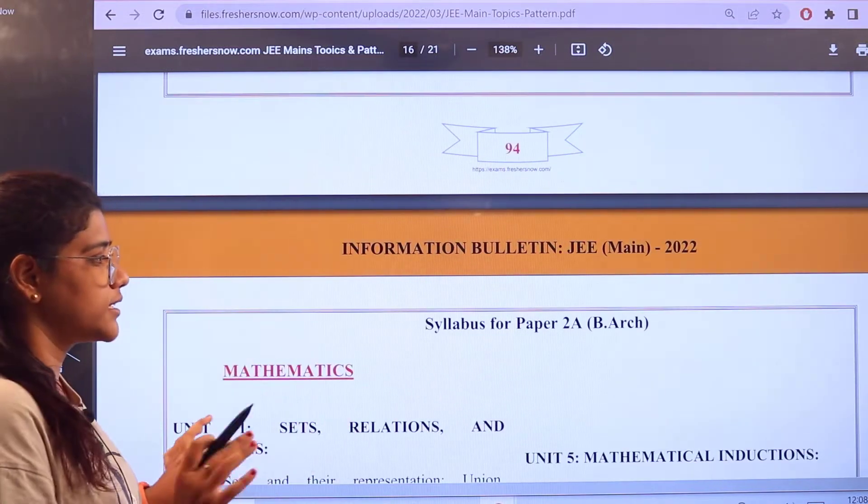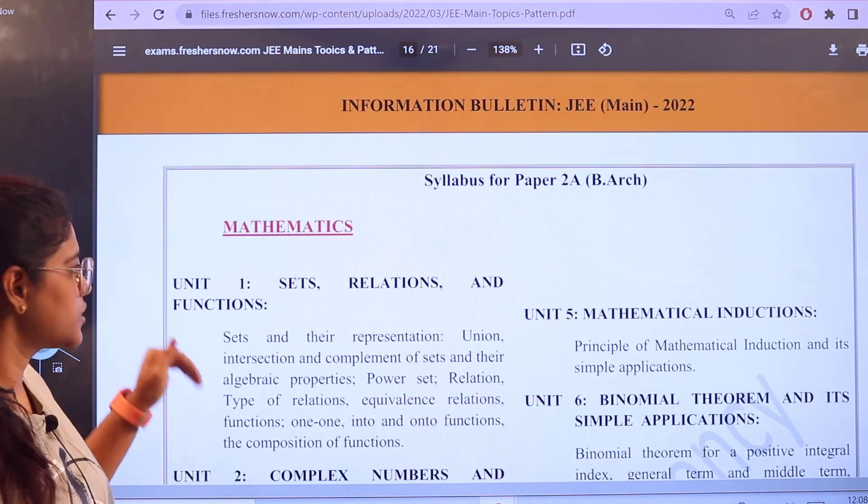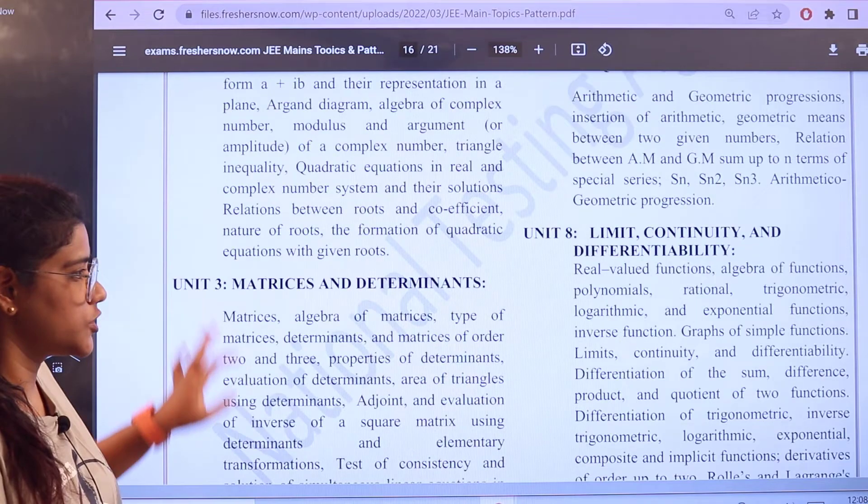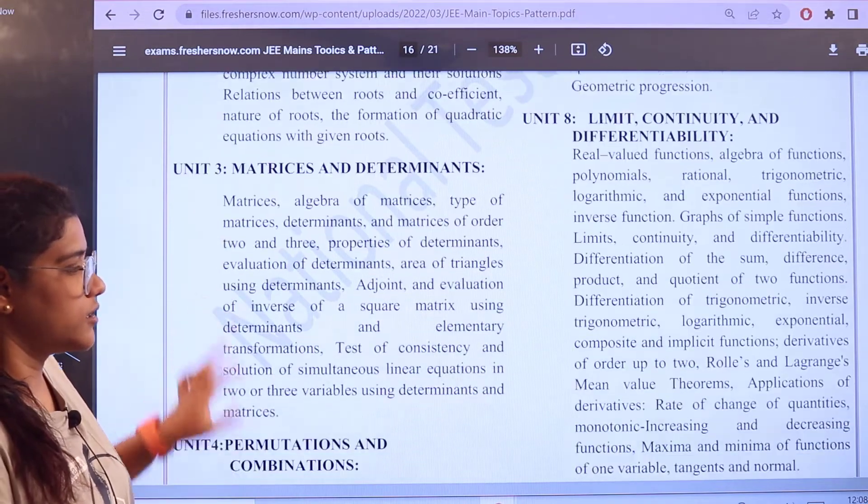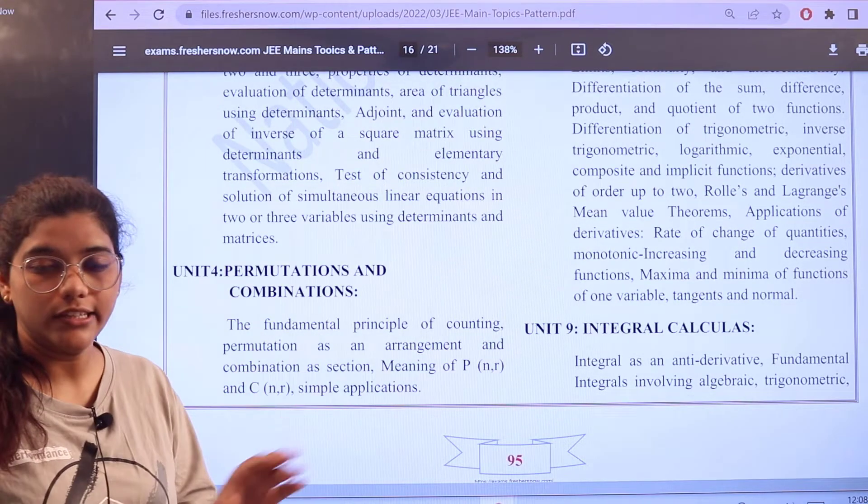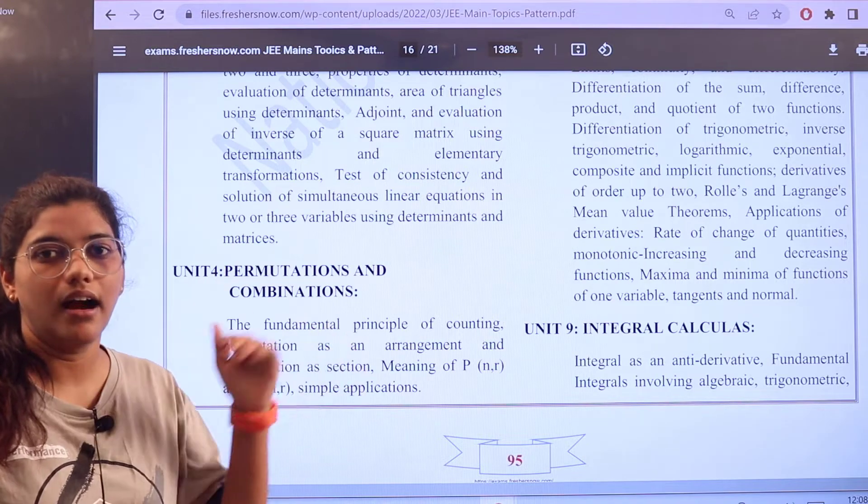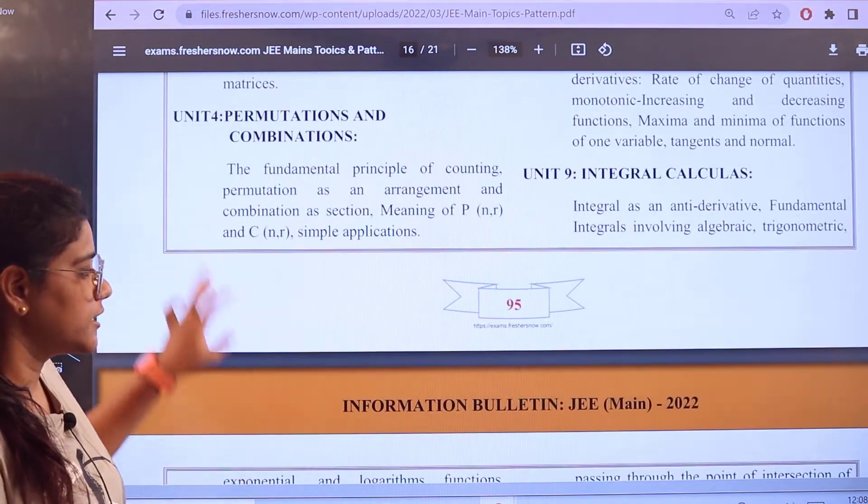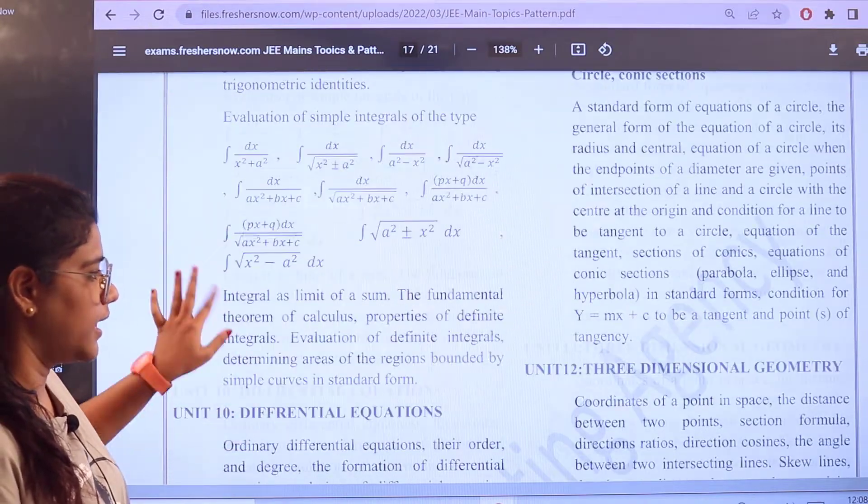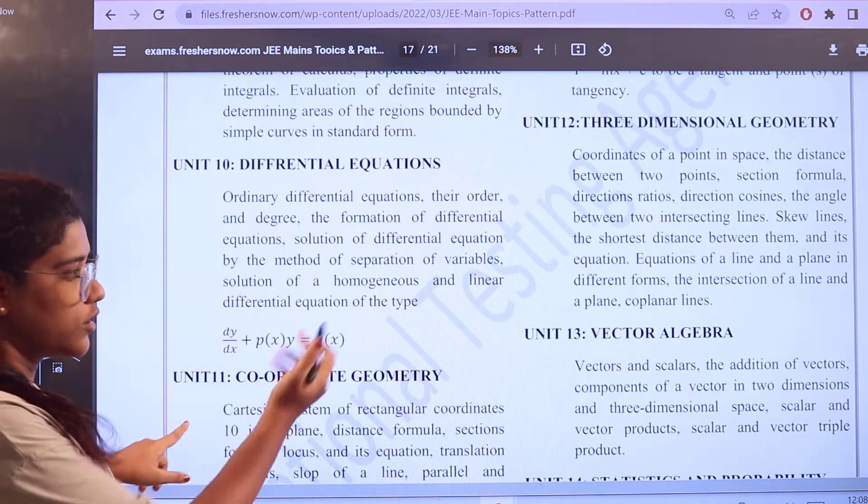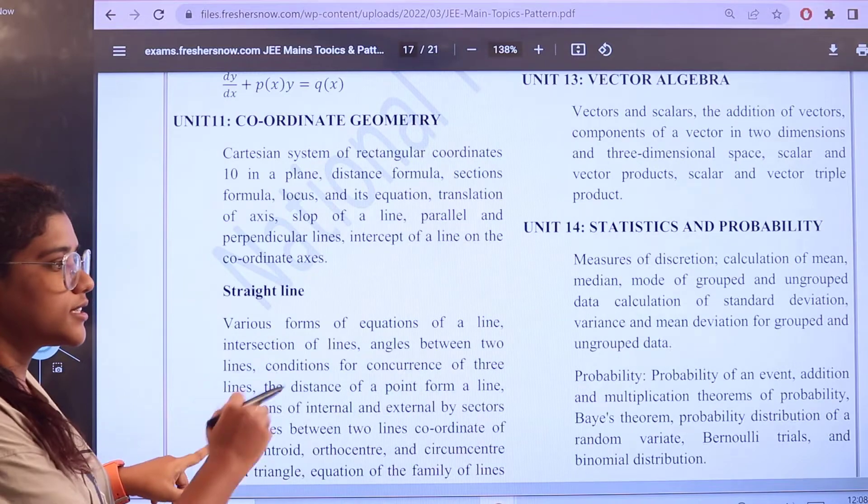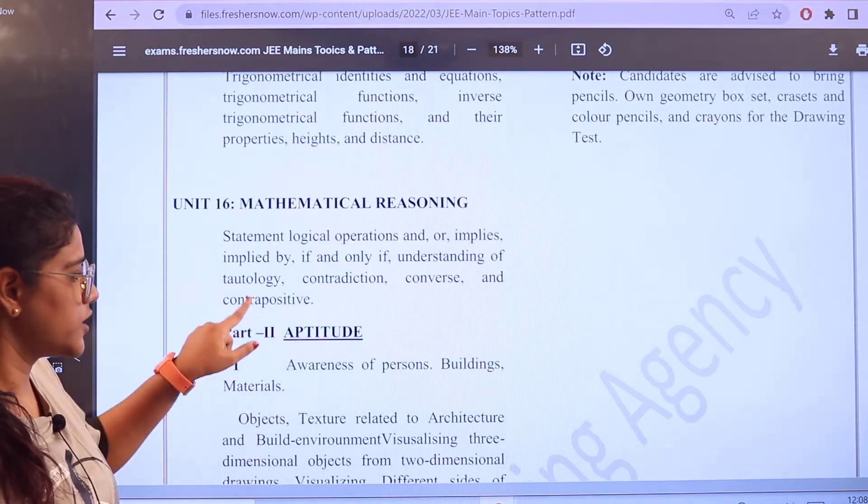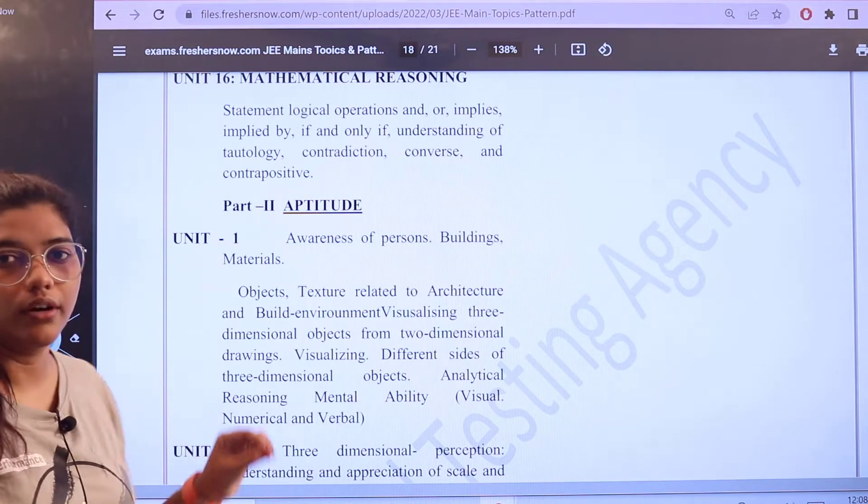Heading over to the syllabus for Paper 2A, Mathematics you have Sets, Relations and Functions, Binomial Theorems, Complex Numbers, Quadratic Equations, Matrices and Determinants. So all of the Mathematics topics which we have repeated earlier are almost the same for this paper as well: Integral Calculus, Circles and other sections, Three Dimensional Geometry. So all of this I've mentioned, right? So all of this is again Mathematics topics are the same. Considering the next one which is Part 2 which is Aptitude.